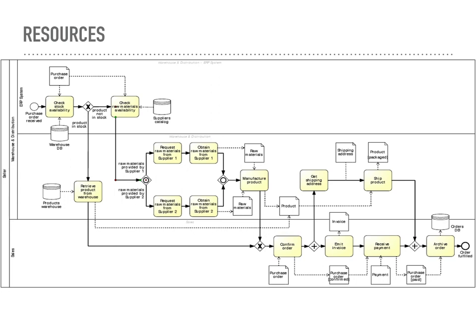In summary, the main difference between active resources and passive resources in BPMN lies in their level of involvement and control within the process. Active resources actively participate, make decisions, and drive the process flow, while passive resources provide services, information, or support to the process without actively driving the flow.